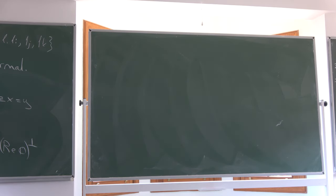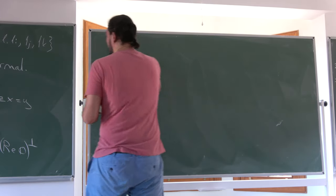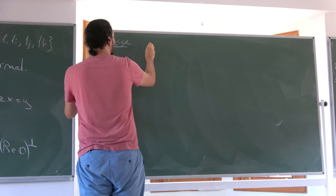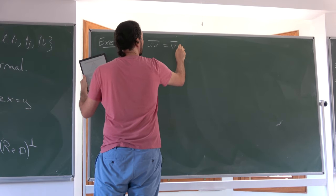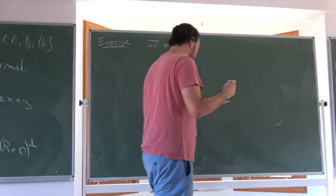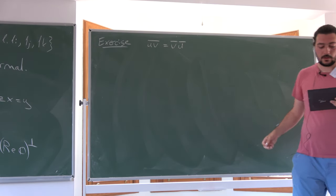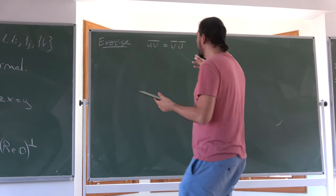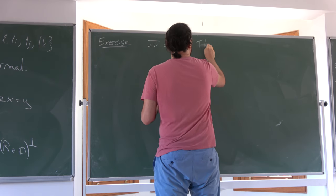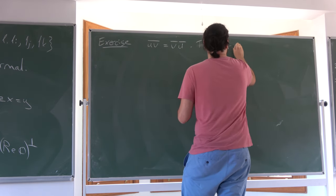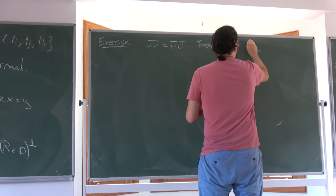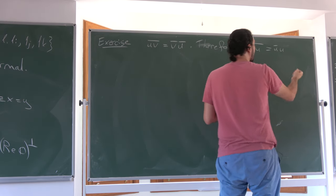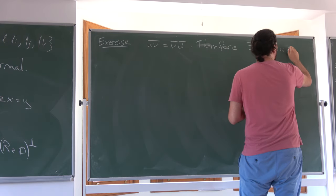Now we want to understand the topology of G2, and for that we need one more definition. We say that a triple U, V, W of imaginary Octonians is called a G2 triple if the set {U, V, UV, W} is orthonormal. A typical example of a G2 triple is I, J, and L. Note that UV is automatically a unit vector since norm is a homomorphism; we just require it to be orthogonal to all three.